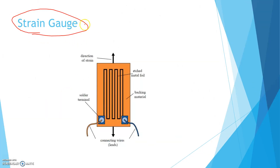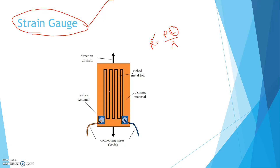I have already explained the working of the strain gauge in detail in my previous video. Basically, the strain gauge is based on this principle: the resistance of a wire is R = ρL/A. That means if L increases, the resistance will also increase. So due to the application of force, the length of the wire in the strain gauge increases, and as a result the resistance increases. We measure the resistance, and from proper calibration we can determine how much force is acting on the sensor.